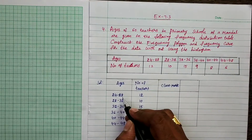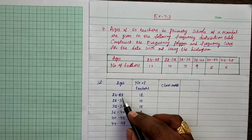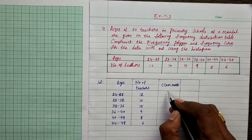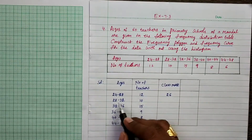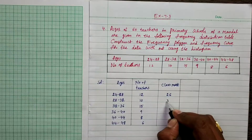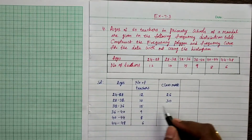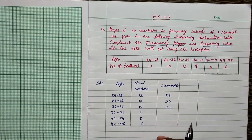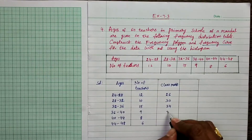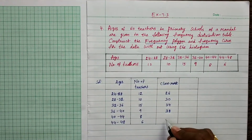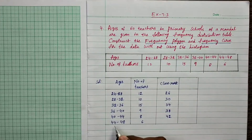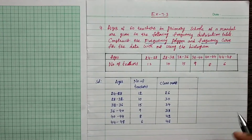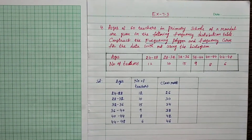For class interval 24 to 28, the class mark is 26. Mid-value of 28 to 32 is 30. Mid-value of 32 to 36 is 34. Mid-value of 36 to 40 is 38. Mid-value of 40 to 44 is 42. Mid-value of 44 to 48 is 46. These are the class marks — mid-values are called class marks.